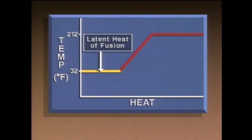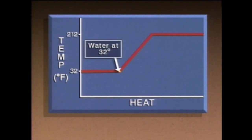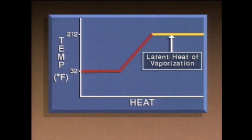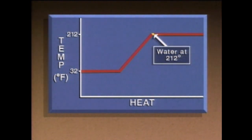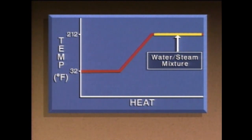This horizontal line at 32 degrees represents the latent heat of fusion, or melting. The latent heat of fusion is the amount of heat required to melt a substance without a change in temperature or pressure. This point represents the latent heat of vaporization — the amount of heat required to vaporize a substance without a change in temperature or pressure. One point represents water at 212 degrees, and another represents steam at 212 degrees, so the line between these points represents a water-steam mixture.